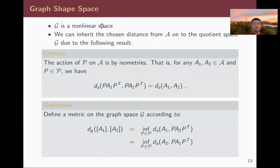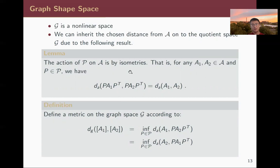What is the metric for this space? Since script J is a nonlinear space, we use an isometry result: the permutation action is an isometric action on script A, meaning that if we permute two adjacency matrices in the same way, the metric DA — the sum of squares of all edge distances — is preserved. Because of this result, we can inherit the metric from the outer space script A into the quotient space script J. The only thing we need to do is optimize over the permutation matrix P.